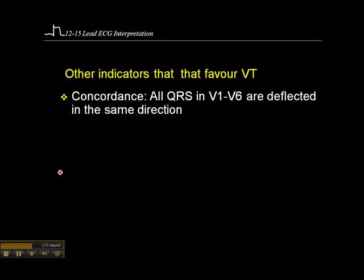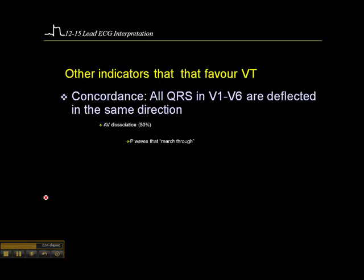Other indicators that favor V-tach include concordance, meaning all QRS complexes in V1 through V6 are deflected in the same direction. Sometimes you'll see virtual concordance where you'll see it in, say, five out of six leads — all deflected upward or all deflected negatively. Concordance is supportive of V-tach.